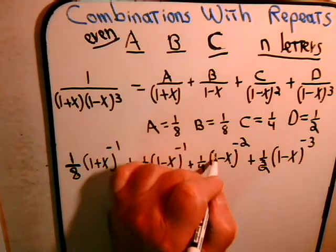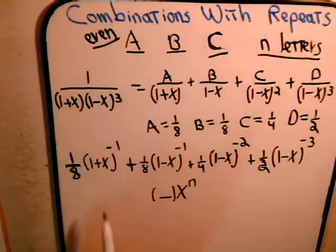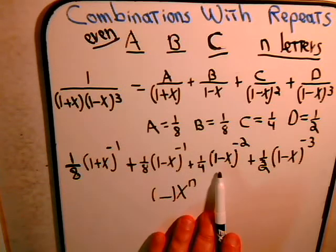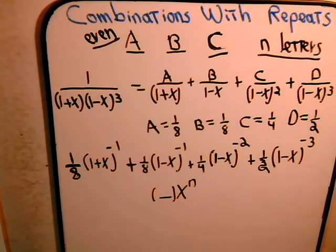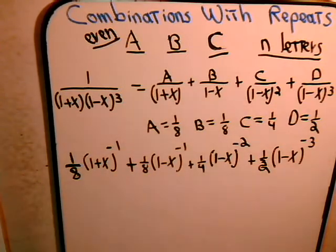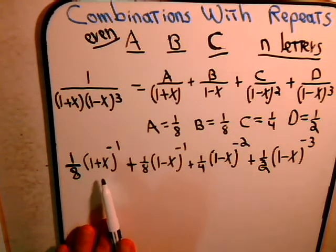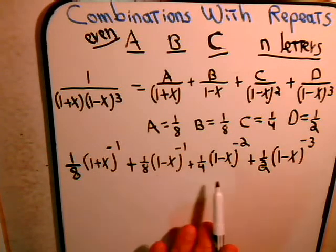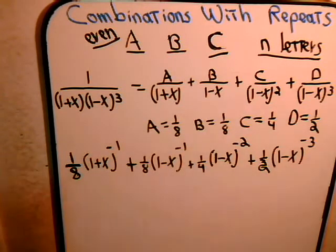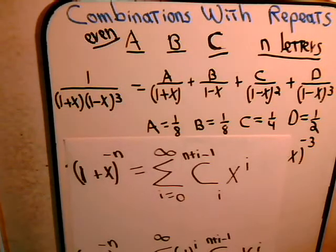For each one of these expressions, we have to determine what the coefficient of x to the n will be. This is where we draw upon our knowledge, from the previous videos in the series, of expanding binomials when we're using negative exponents. The formulas we had derived previously are as follows: 1 plus x to the minus n is this infinite series, and 1 minus x to a negative exponent is this series.